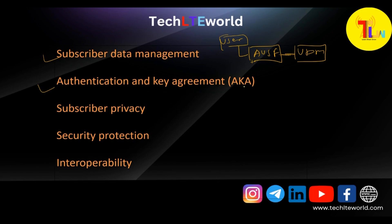The next functionality is Authentication and Key Agreement, the AKA protocol. This is a very important one. AUSF supports the AKA protocol, which is used for mutual authentication between the subscriber and the network. It provides a secure mechanism for exchanging keys and establishing a secure communication channel between the subscriber and the network. We will elaborate on this in more detail in upcoming sessions.